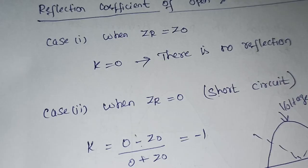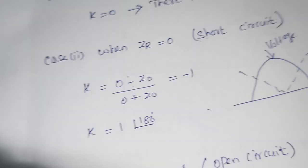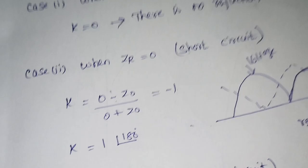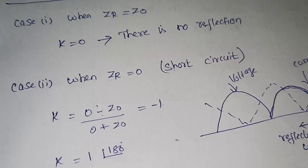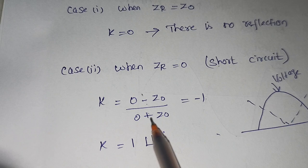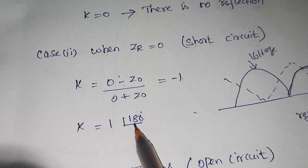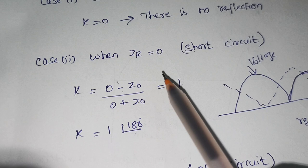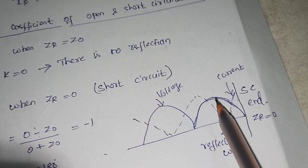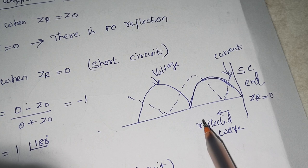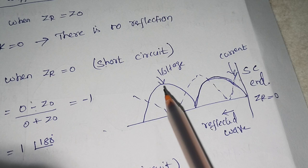Case two is when ZR is equal to 0. As per the formula, when ZR becomes 0, K will be (0 − Z0) / (0 + Z0), which equals −1. In polar form with magnitude and phase, it becomes 1∠180°. When ZR becomes 0, the circuit is short circuited at the other end. From the short circuited end, the current will be maximum and the voltage will be minimum.